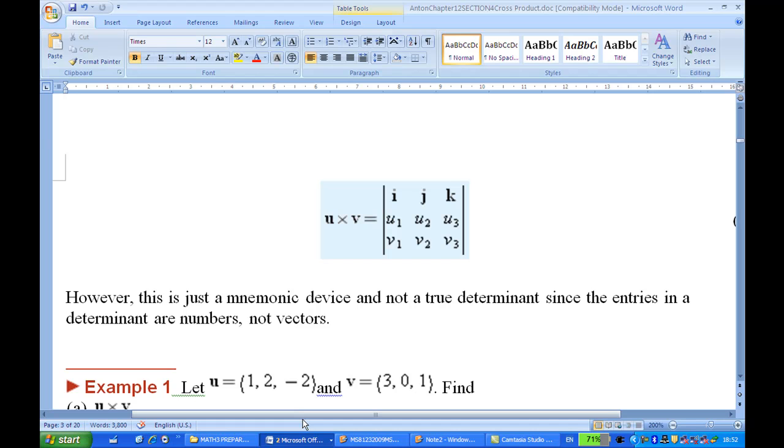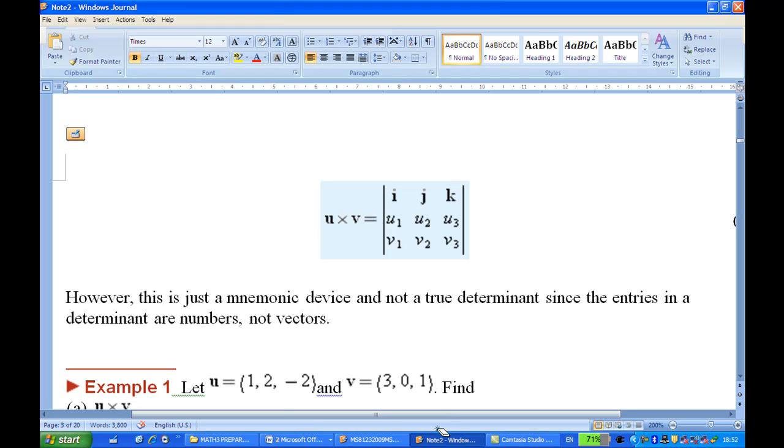Say that if you have vector u cross v, this is a 3 by 3 determinant. i, j, k in the first row and component of u in the second row, component of v in the third row and you expand this determinant. So let's go back to the question.